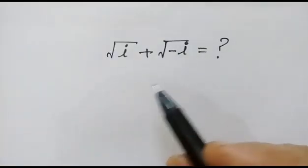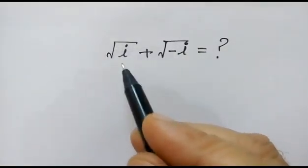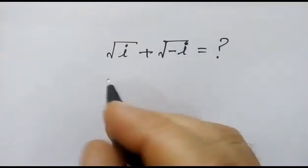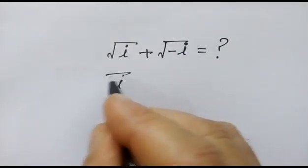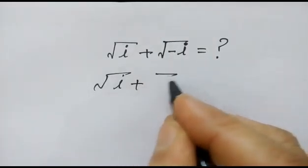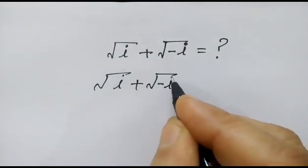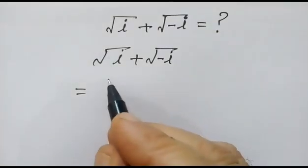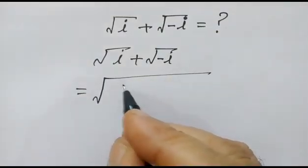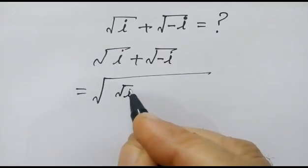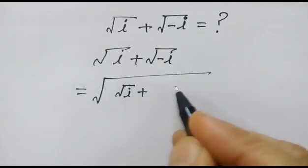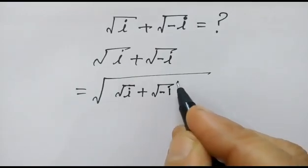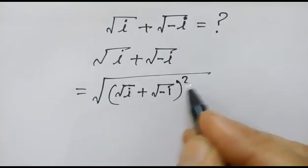Hi friends, we have to find out the value of square root of i plus square root of minus i. So square root of i plus square root of minus i is equal to — we can write this as square root of i plus square root of minus i, whole square.